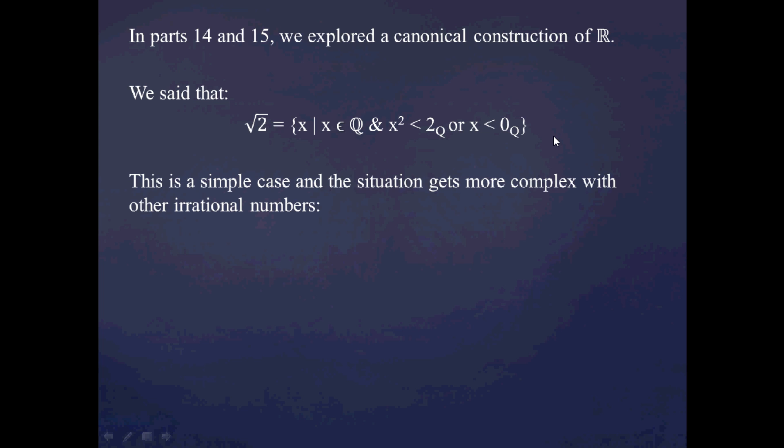But it should be pointed out that this is an extremely simple case. And in general, square roots are very simple cases to build with Dedekind Cuts, since you essentially insert the predicate or the formula there, which reads something like x squared is less than something, less than some rational number. In the case of the square root of 2, it's x squared is less than 2. If you were to construct the square root of 29, it would be x squared is less than 29.